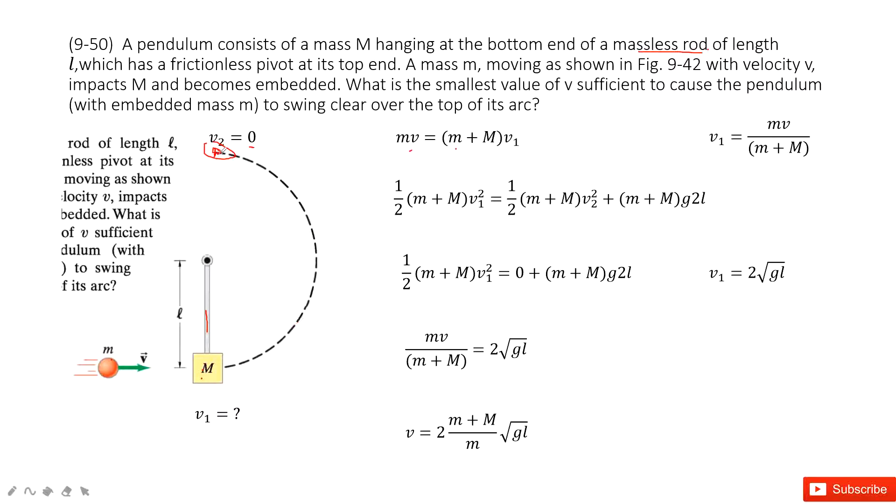Initial energy is the kinetic energy from the bullet and the box. The final energy is the kinetic energy for the bullet and the box plus the potential energy. Potential energy is how much it moved from 0 to 2L. So it's the mass for the bullet and the box, m+M, times g times 2L.